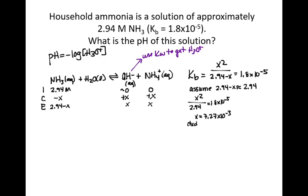If you take 2.94 and you subtract 0.00727, you get 2.93273, which doesn't actually round back to 2.94. So that means that our assumption is invalid here. And all that means is that we have to go back and do the quadratic equation.